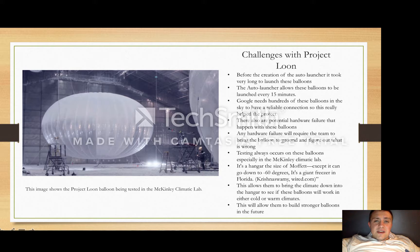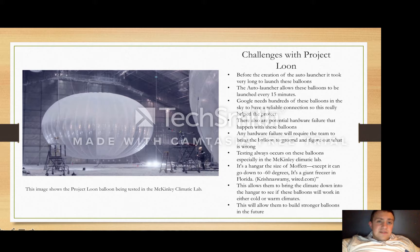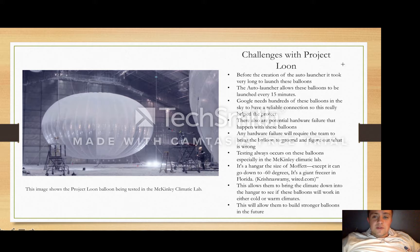This picture on the left shows the balloon being tested in the McKinley Climatic Lab. They test in freezing conditions here — it's a hangar inside Moffett that can go down to negative 60 degrees. They basically call it a giant freezer in Florida. This allows them to test for cold climates to see if these balloons will be able to travel without breaking in cold conditions. They can do a lot of different tests here, such as with the auto launcher itself, and this will help them build stronger balloons in the future.